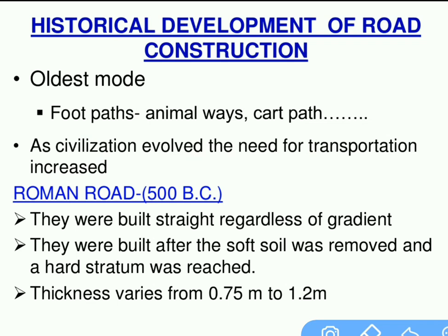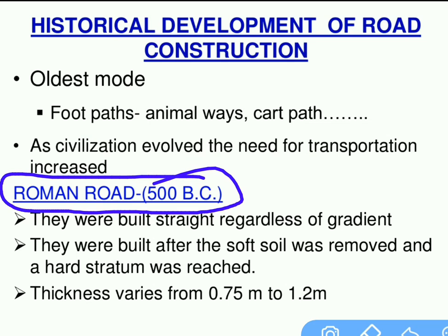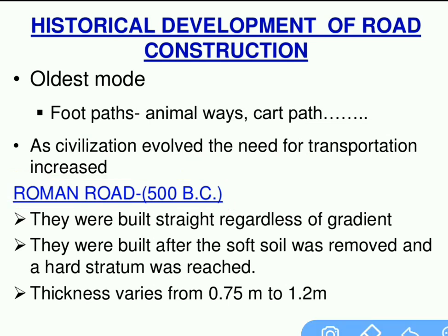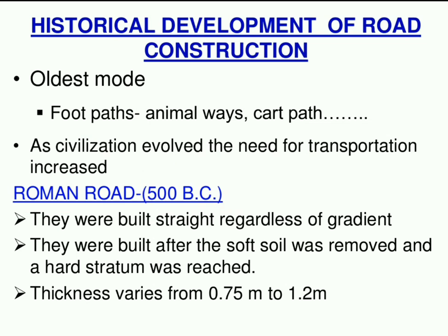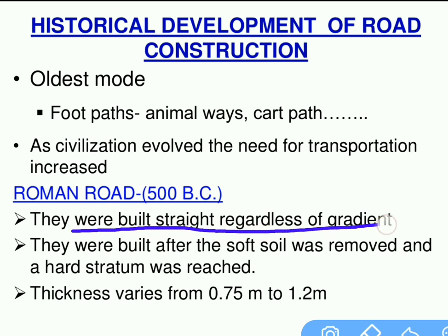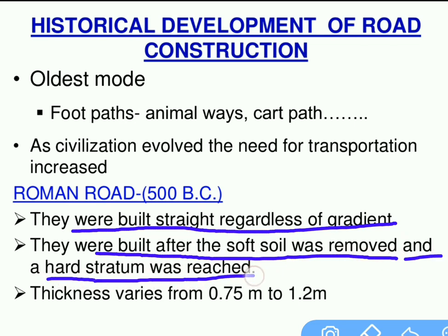As per records, the first road is the Roman road, constructed in the year 500 BC — that means before Christ. They were built straight regardless of gradient. They were built after the soft soil was removed and a hard stratum was reached. The thickness varies from 0.75 meters to 1.2 meters.